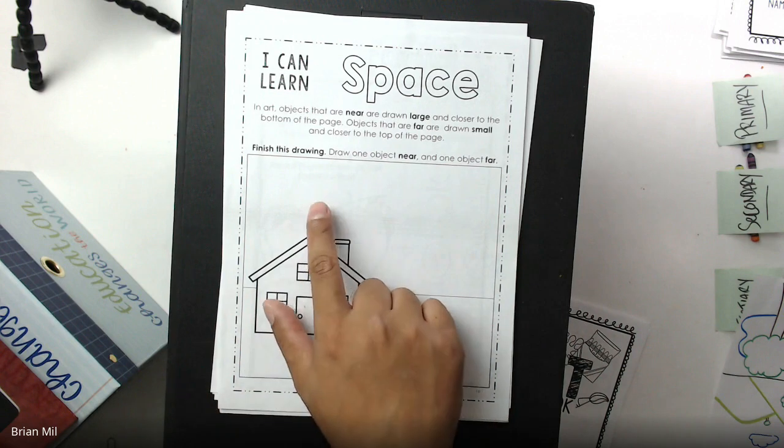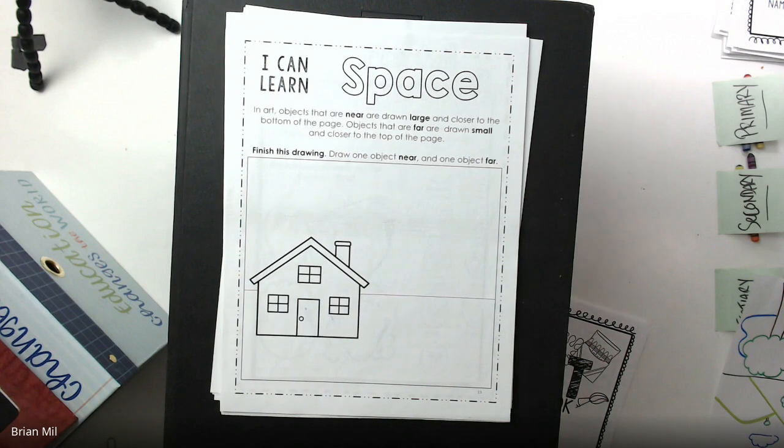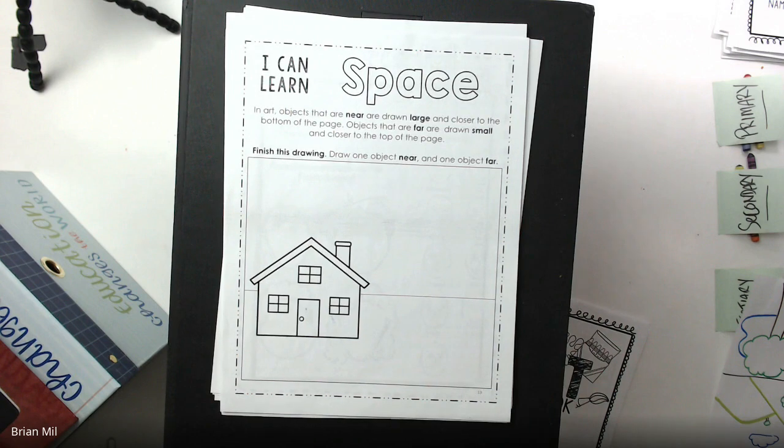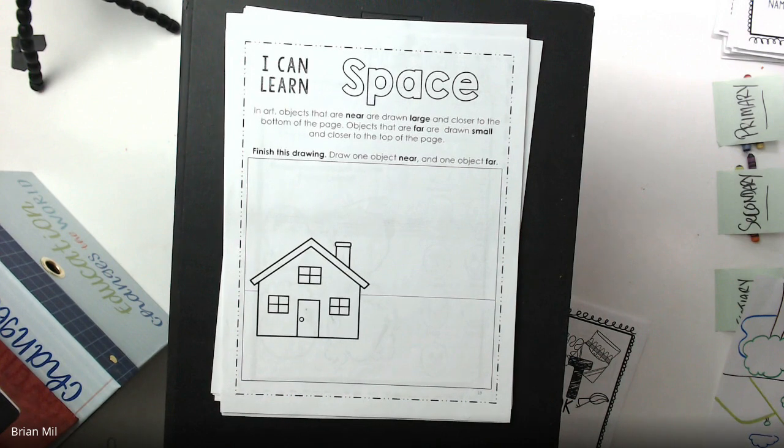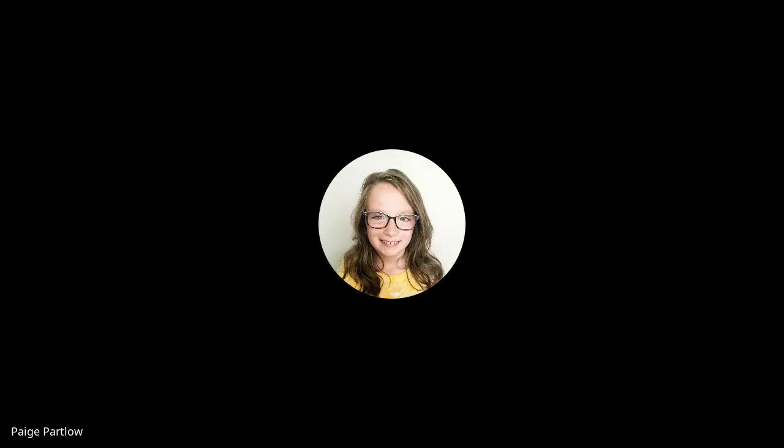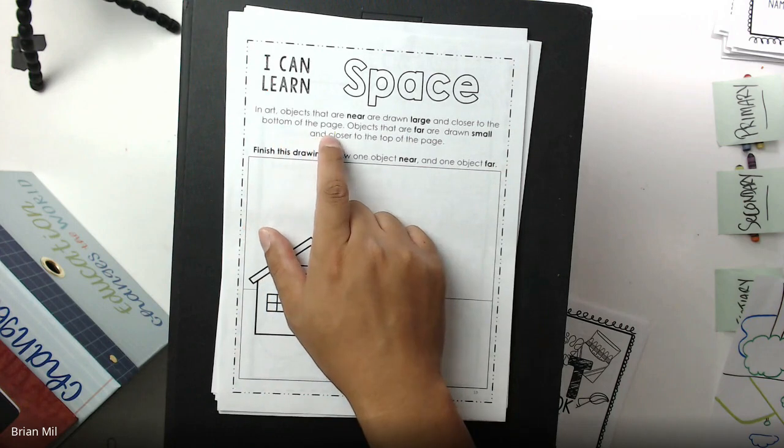Then the directions are, finish this drawing, draw one object near and one object far. All right, my first question, if I were to draw something near to us, if we're looking at a page, what size should it be? Anyone know? You may raise your hand. What size should something be if you're trying to draw something that's near to you? Large. Large. Good job. It should be large. And also just to add to her, it also has to be closer to the bottom of the page.